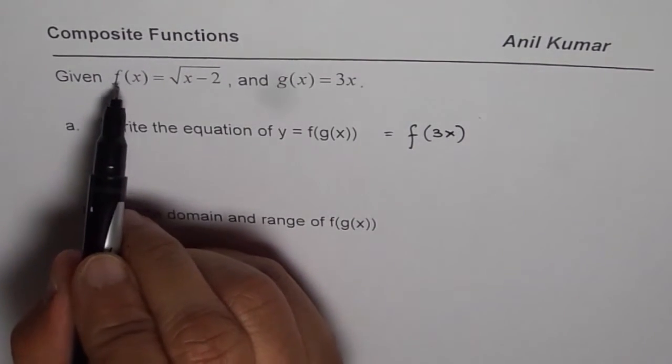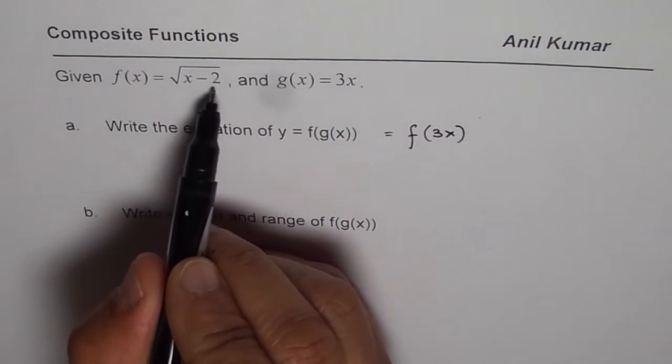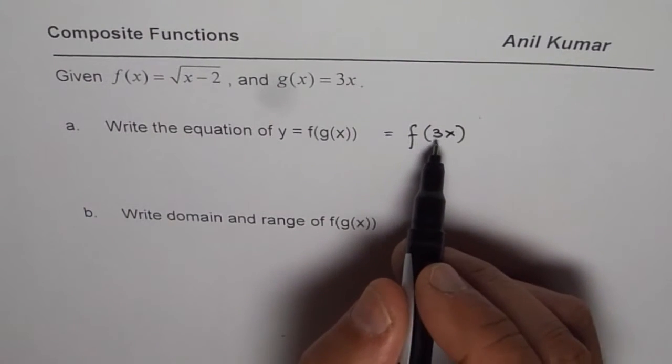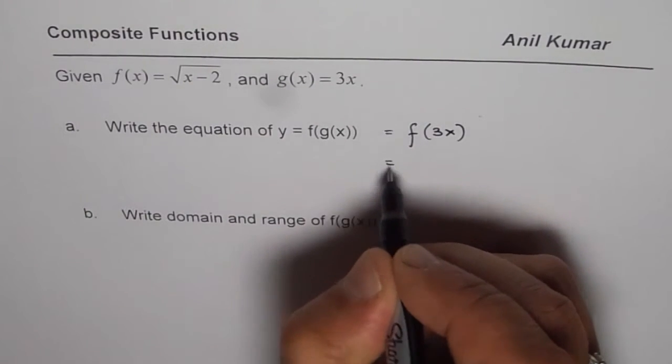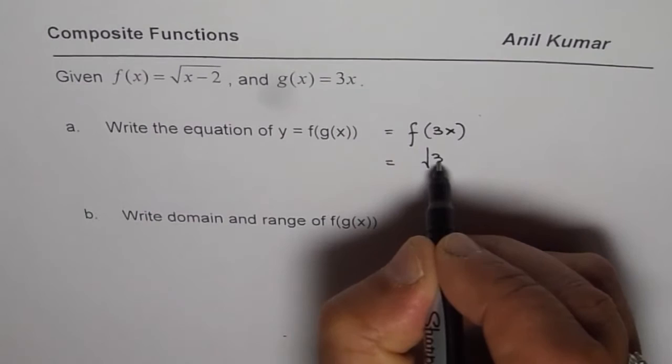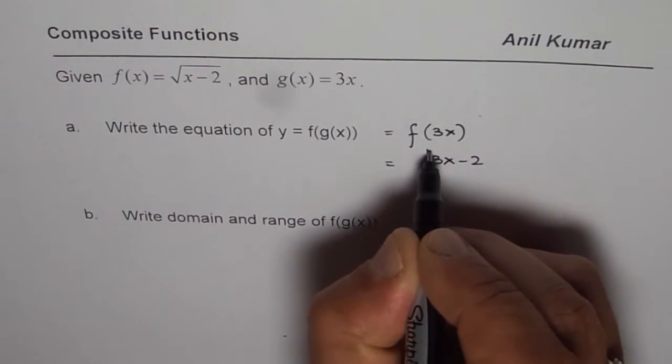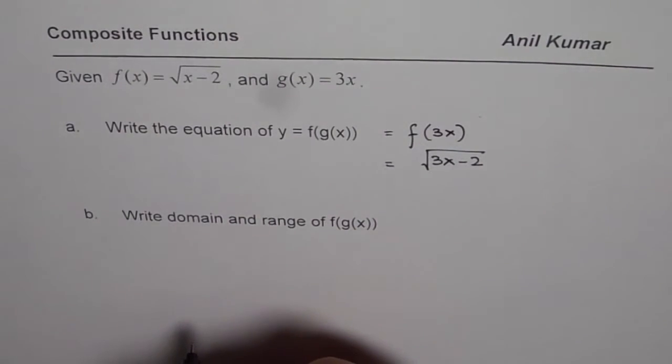Now f(x) is square root of x minus 2. Therefore f(3x) will replace x with 3x. So what we get? We get square root of 3x minus 2. That becomes the composite function.